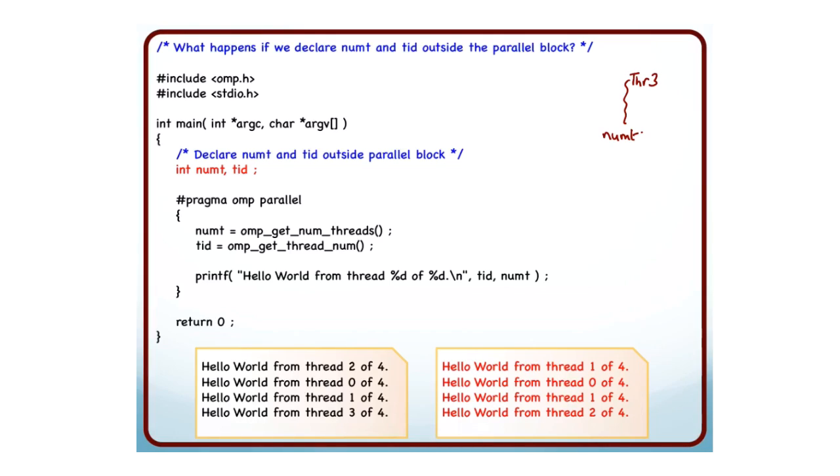Thread 3 was, let's say, executing. Yeah, it executed numt = omp_get_num_threads() and in the meanwhile, what happened was that thread 1 came along. It executed numt = omp_get_num_threads(). Both of them got the number of threads and let's say then thread 3 executed tid = omp_get_thread_num(). This tid is a shared variable. So what got stored into tid? Thread 3 stored the value 3 in the variable tid. It is shared by all the threads and now, before it could get to printf, what happened was that thread 1 came and executed tid = omp_get_thread_num(). So what happened here? What happened was this actually got replaced with the value 1.